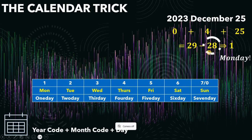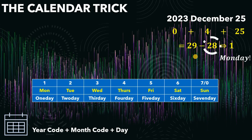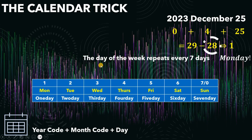Now, why do we subtract a multiple of 7? The reason is the day of the week repeats every 7 days. That is very simple.